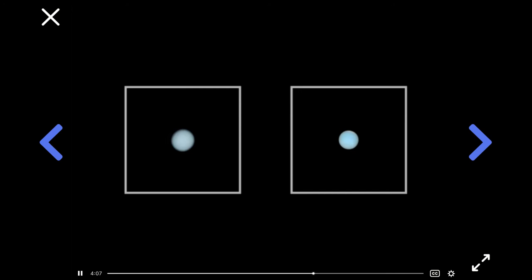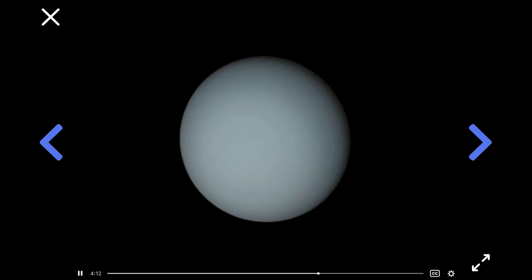The Voyager 2 spacecraft sent back the first ever close-up image of Uranus in 1986. Are you ready? See? Weirdly, Uranus still just looked like a blue disk. It's kind of pretty, actually.